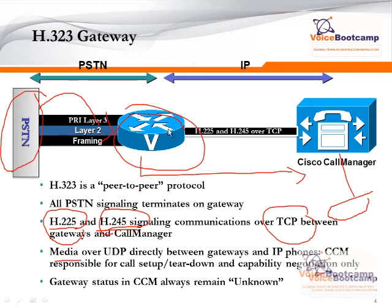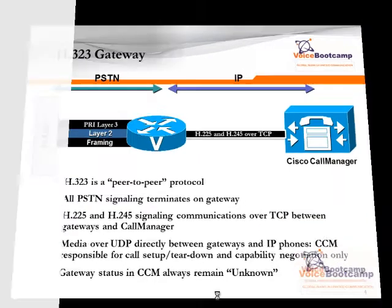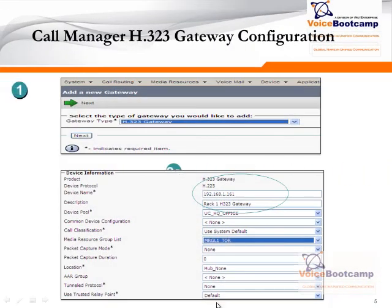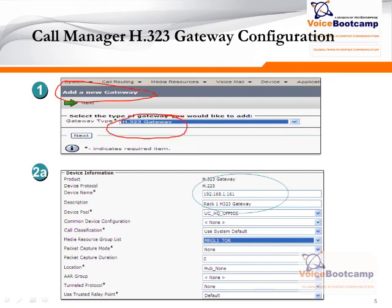When you register a router to the Call Manager as an H.323 gateway, the gateway status in Call Manager will always be unknown. To add a gateway, go to the Device menu, add a gateway, and select H.323 gateway.